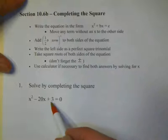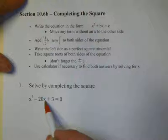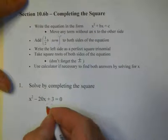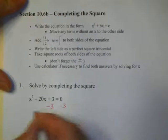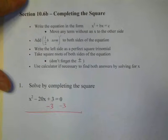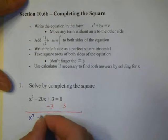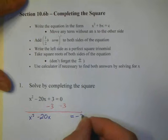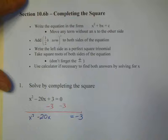In our first example, we have a plus three tacked onto the x squared minus 20x. To eliminate this, we're going to subtract three from both sides. That's going to give us our starting point, x squared minus 20x equals negative three.